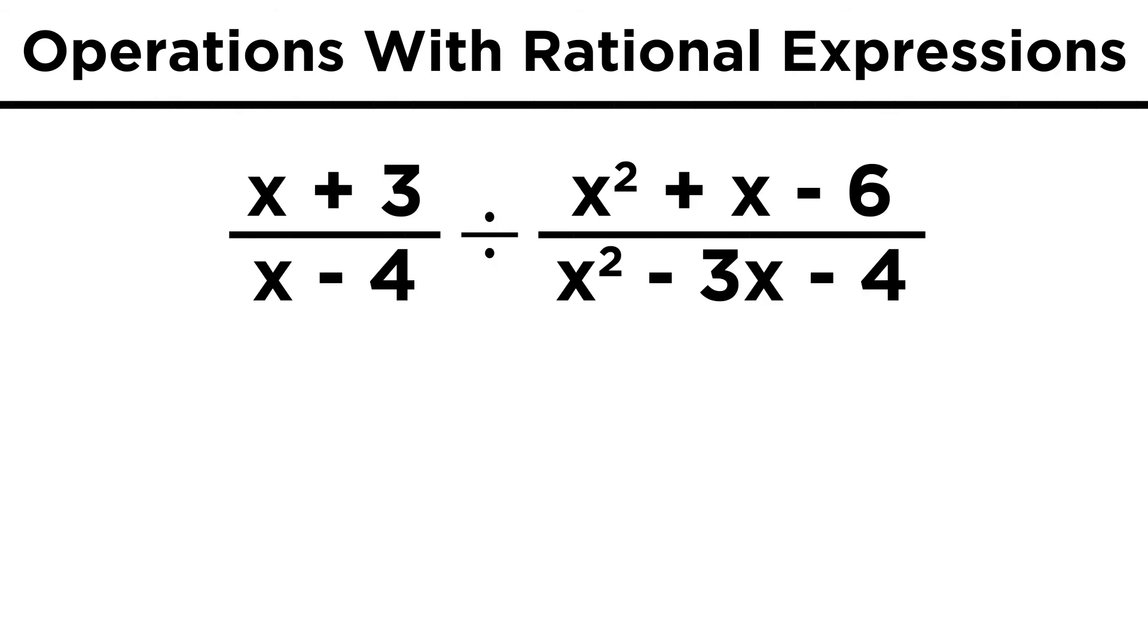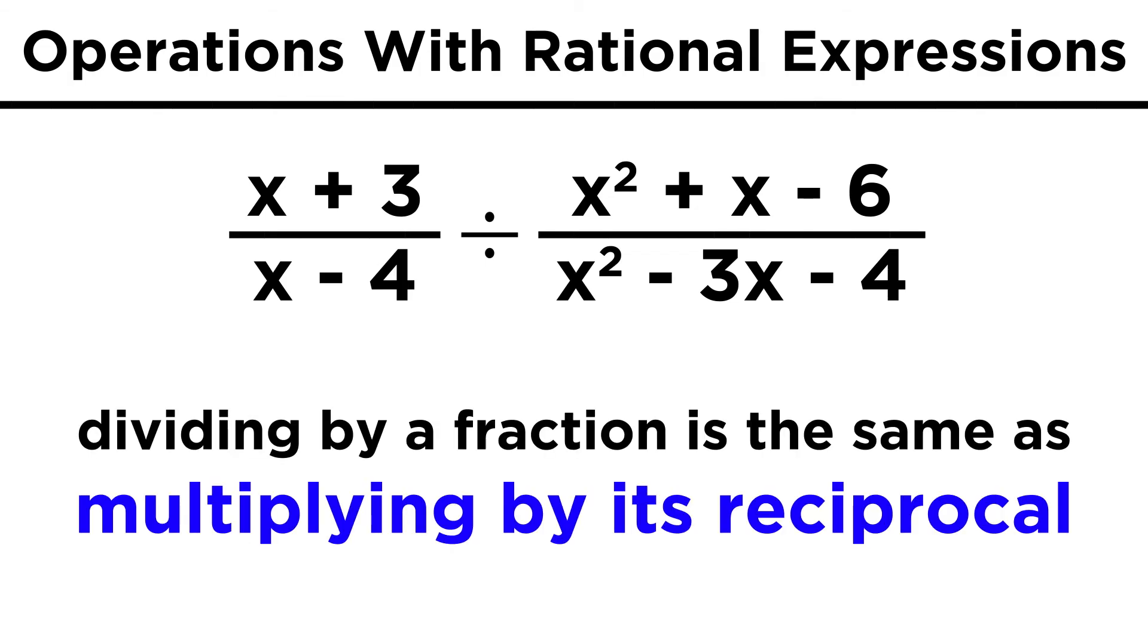Division works very similarly. If we have x plus three over x minus four divided by x squared plus x minus six over x squared minus three x minus four, we have to realize that dividing by a fraction is the same thing as multiplying by its reciprocal, so all we have to do is flip this second fraction over and multiply.